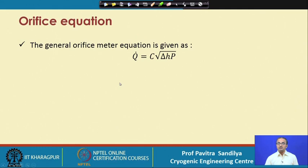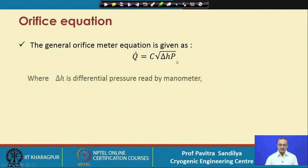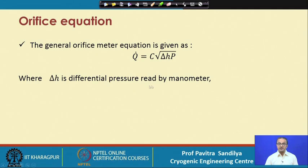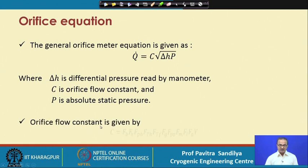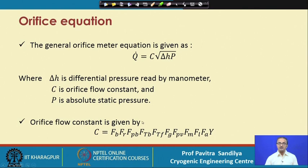In the natural gas industry, the flow equation is expressed as Q = C√(ΔhP), where delta h is the differential pressure measured by the manometer, C is the orifice flow constant, and P is the absolute static pressure. The orifice flow constant is given in terms of many correction factors.